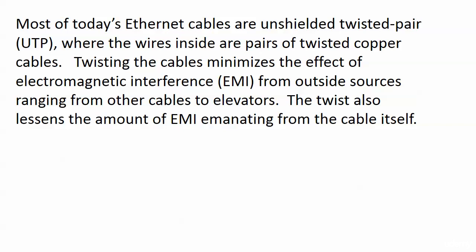Most of today's Ethernet cables are unshielded twisted pair — UTP — where the wires inside are pairs of twisted copper cables. There are four pairs, eight wires overall. Why the twisted pair? Twisting the cables minimizes the effect of EMI — electromagnetic interference — from outside sources ranging from other cables, to other wires in the same cable, to actually elevators, believe it or not. That twisting also lessens the amount of EMI that the wires are putting out, so it's stopping or at least minimizing EMI coming in and preventing as much as possible from going out.